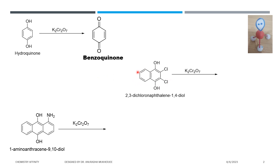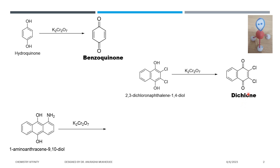This is a naphthalene moiety. It contains 2 OH groups at the 1 and 4 positions. In presence of K₂Cr₂O₇ it oxidizes and gives a quinone type of compound which is known as dichlone.